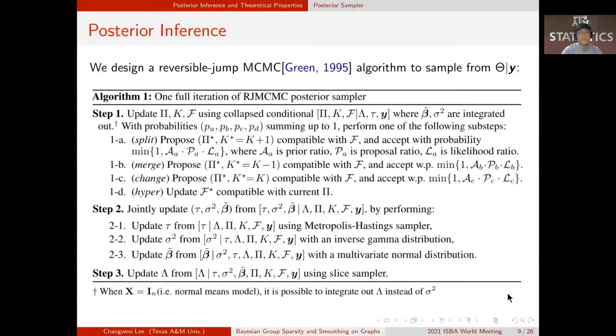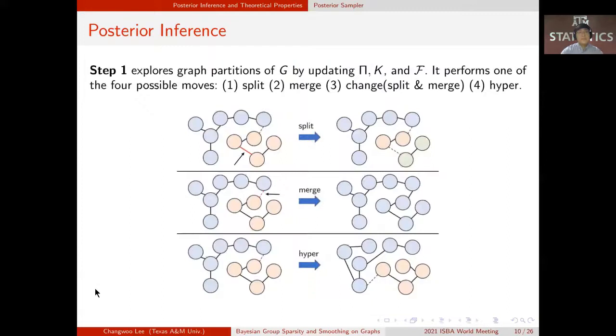We designed a reversible jump MCMC algorithm to sample from the posterior. The algorithm is comprised of three steps. Step 1 explores graph partition of G by updating partition-related parameters phi, K, and F. It performs one of the four possible moves. Split move by choosing within cluster edge and split it. Merge move by choosing a between cluster edge and merge it.